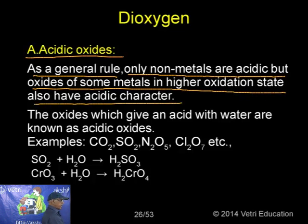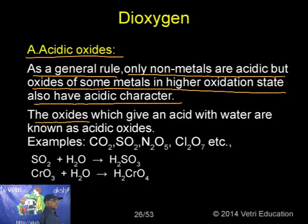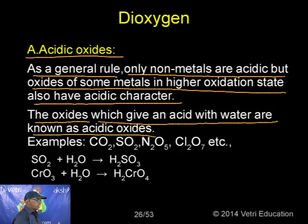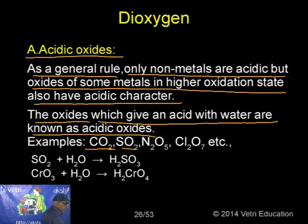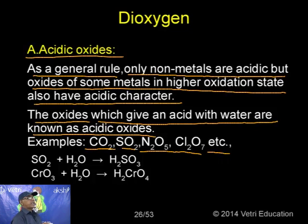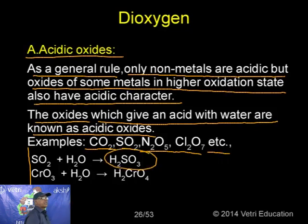Amphoteric oxides are metallic oxides that exhibit dual behaviour — behaving both as acid and as base. They react with acids as well as alkalis. The specific example is aluminium oxide Al₂O₃. Al₂O₃ reacts with 6 moles of HCl in the presence of water to produce the complex hexaaquaaluminium(III) chloride — behaving as a basic oxide here.